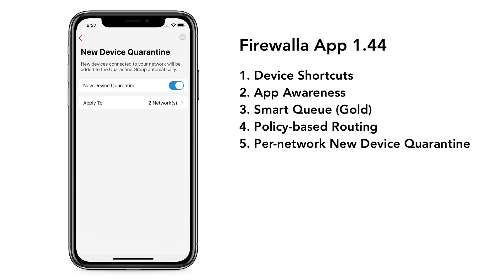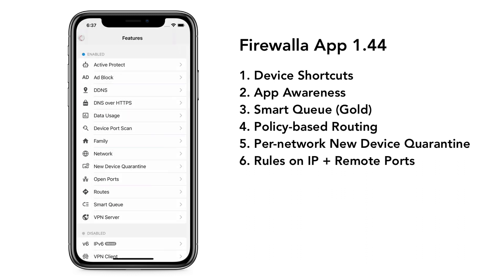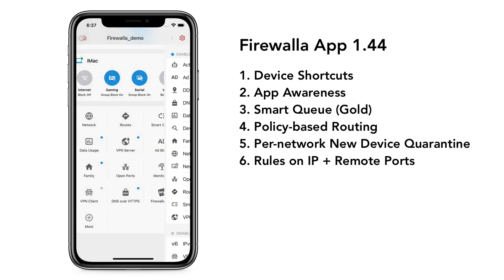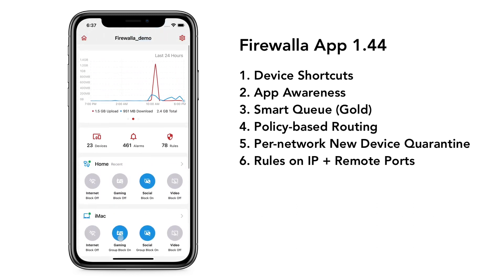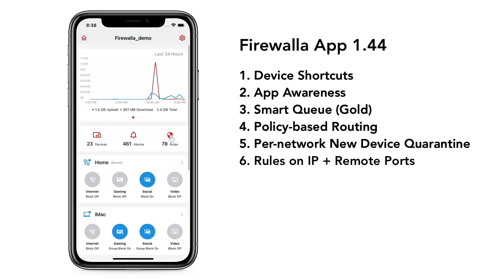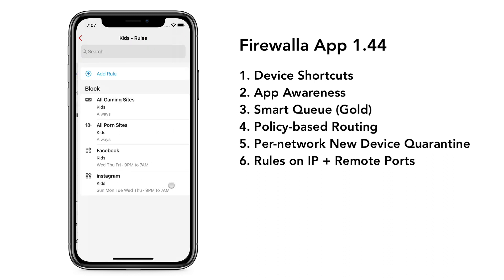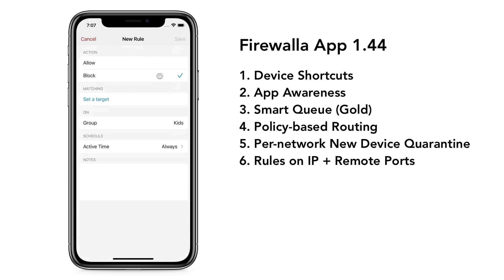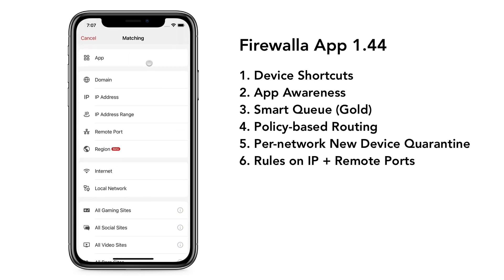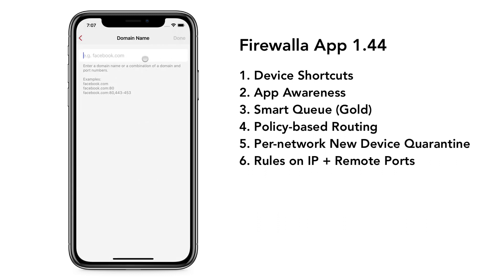This function is on the Firewall code only. The other enhancement is that rules can now be created with a combination of IP and a remote port number. For example, if you want to block all FaceTime traffic but you don't want to block other traffic to Apple.com, you can create a rule like this.